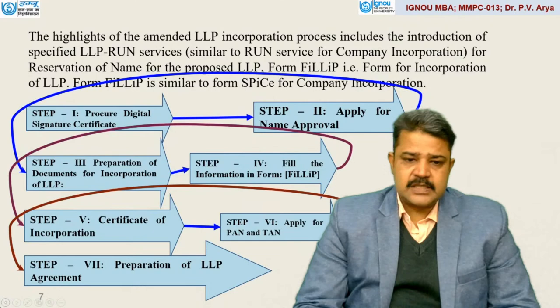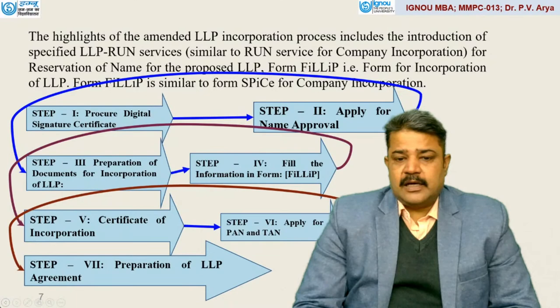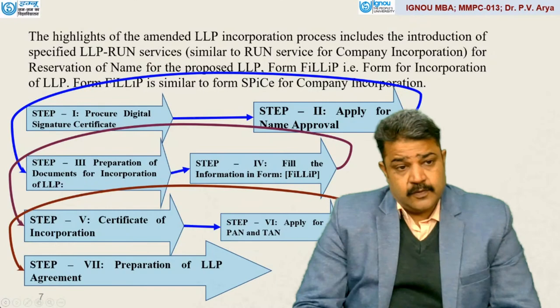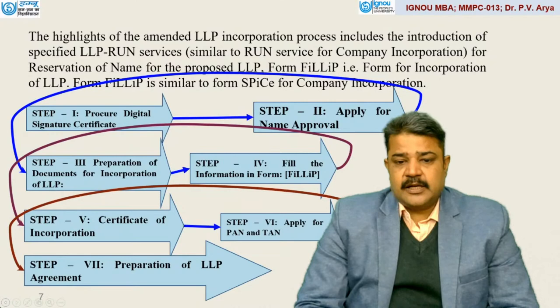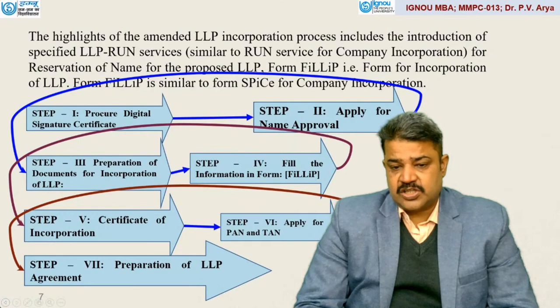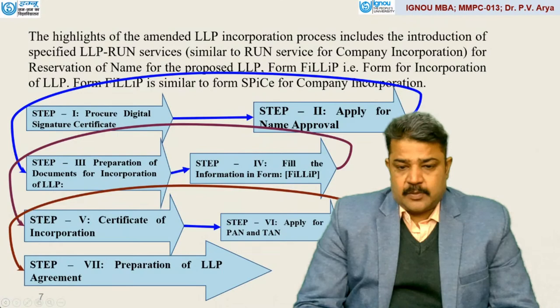Once steps one to four are over, incorporation is processed. Step six involves applying for PAN and TAN. The PAN stands in the name of that LLP and will subsequently be used for income tax or taxation purposes. Similarly, TAN is for the tax identification number. Nowadays, GST registration is also required subsequent to this — that is also mandatory depending upon the type of business, because GST is required for almost all tax requirements.